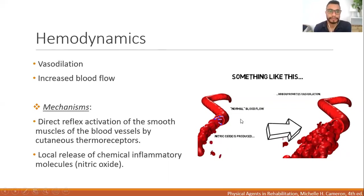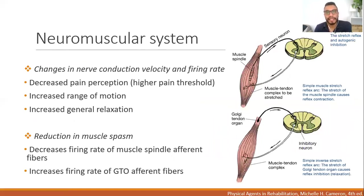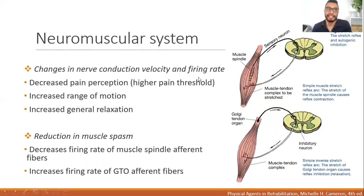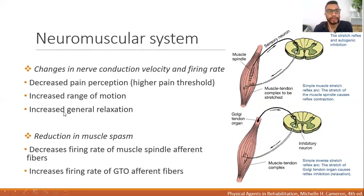In the neuromuscular system, changes occur mainly in nerve conduction velocity and firing rate. The observed effects include decreased pain perception — meaning the person has a higher pain threshold and is less sensitive to pain — as well as increased range of motion and increased general relaxation.